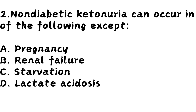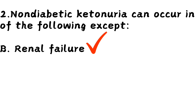Question 2. Non-diabetic ketonuria can occur in all of the following except: Option A, pregnancy. Option B, renal failure. Option C, starvation. Option D, lactic acidosis. The right answer is Option B, renal failure. Non-diabetic ketonuria can occur in pregnancy, starvation, and lactic acidosis.